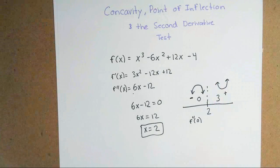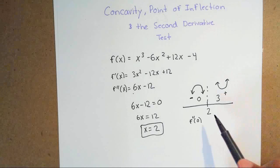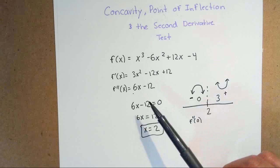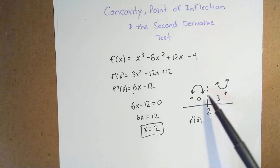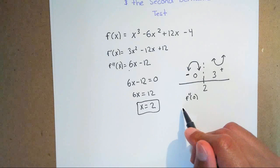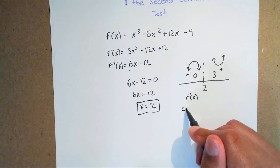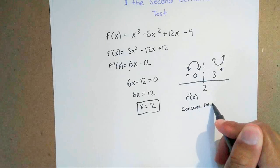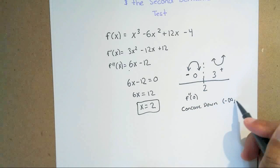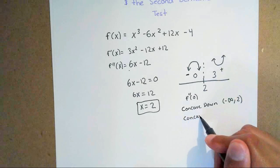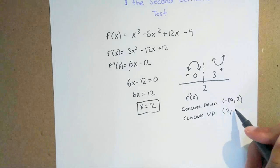By finding your second derivative, setting it equal to 0, finding your critical numbers, placing them on a number line, testing values left and right, and plugging them into your second derivative, you can determine your intervals of concavity. For this equation, you have concave down from negative infinity to 2, and concave up from 2 to infinity.